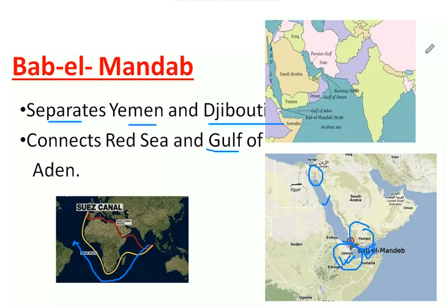Another important strait is the Sunda Strait, which is located between Sumatra and Java in Indonesia. It connects the Java Sea and the Indian Ocean.